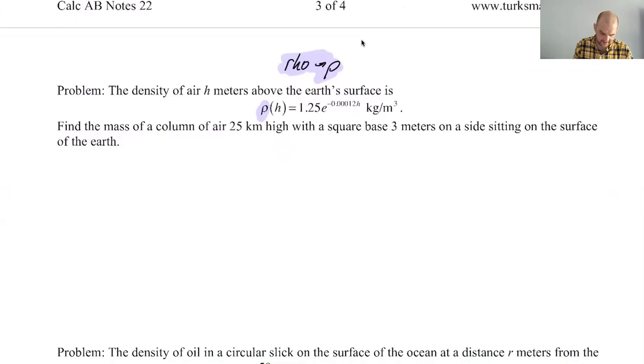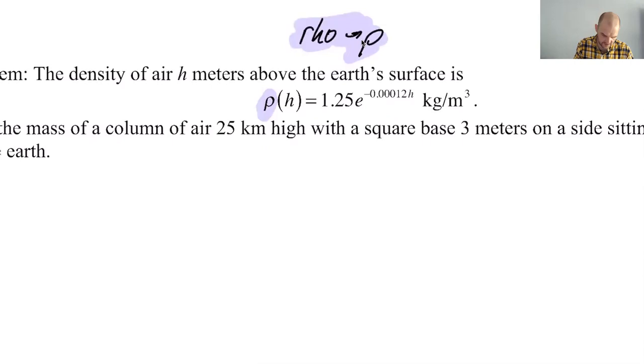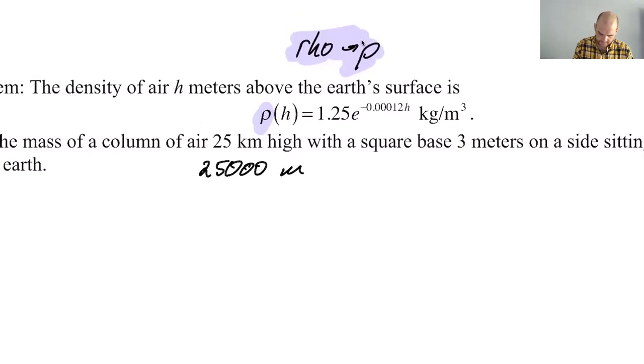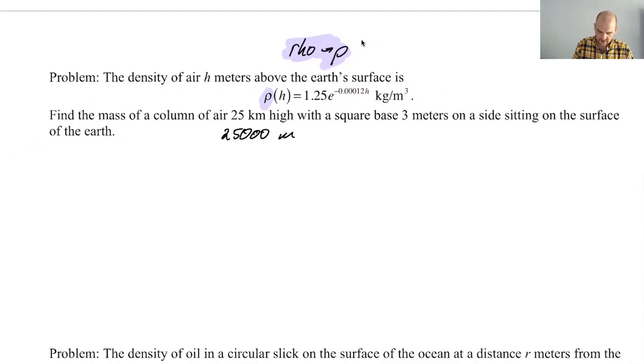That's the density of air h meters above the Earth's surface. Find the mass of a column of air that's 25 kilometers high. So that's a pain in the neck because that's 25 kilometers, and this is in meters. So I'm going to have to convert that to meters. That's 25,000 meters. Always got to watch your units. With a square base three meters on the side, sitting on the surface of the Earth.